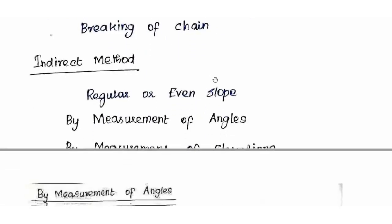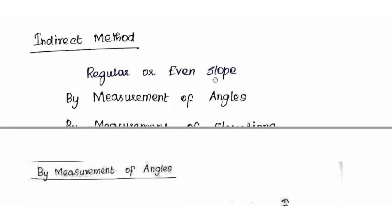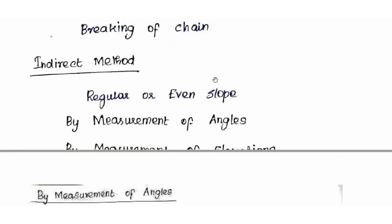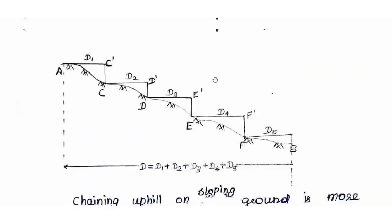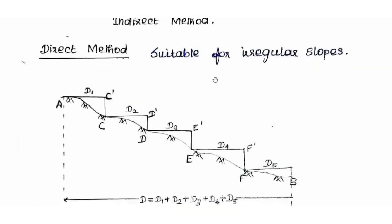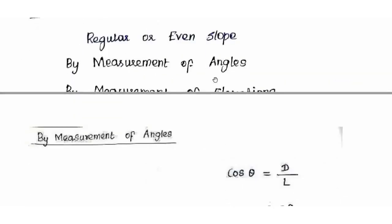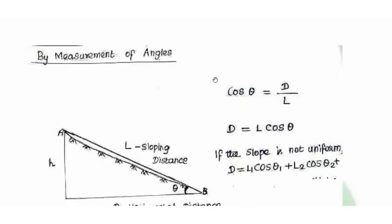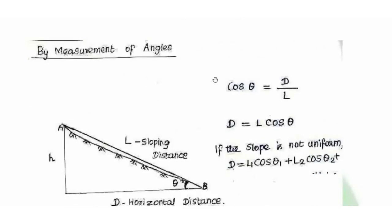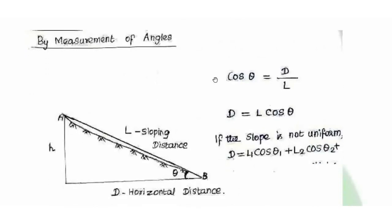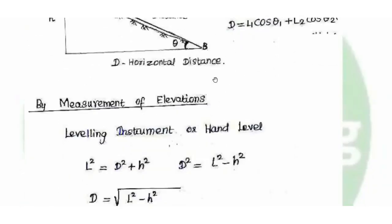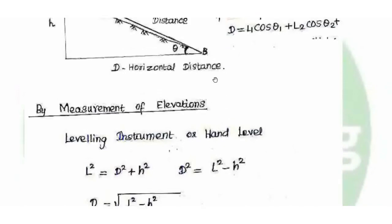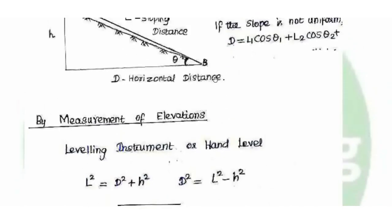Next is the indirect method for chaining on sloping ground. This is used when the slope is regular or even. In the indirect method, we measure sloping distance in the field and calculate the horizontal distance from it. There are three types of indirect method: by measurement of angles, by measurement of elevations, and by hypotenusal allowance.